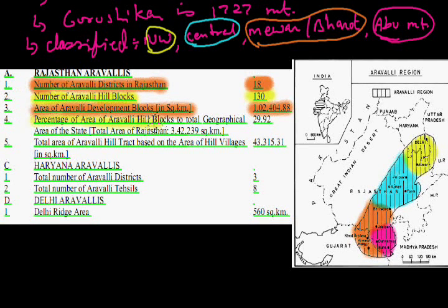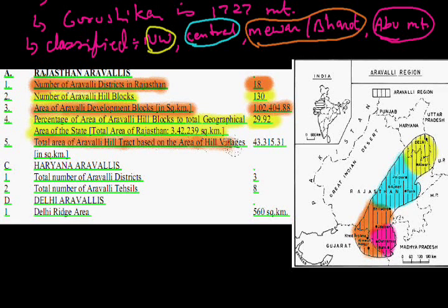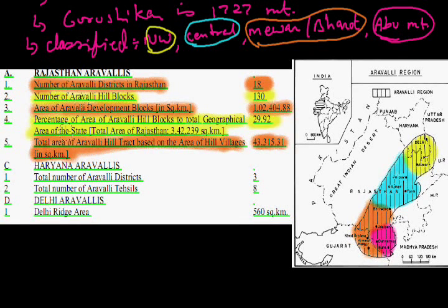The percentage of land covered by the Aravali of the total land of Rajasthan is approximately 30%, as you can see in the map. The total area of the Aravali hills track, based on the area of hill villages, is 43,315 square kilometers.